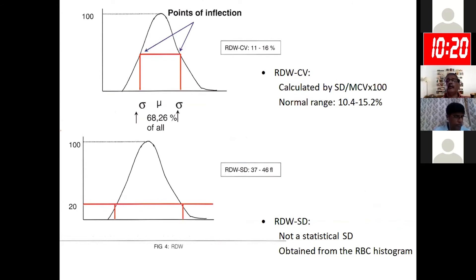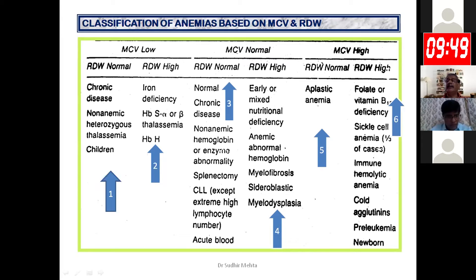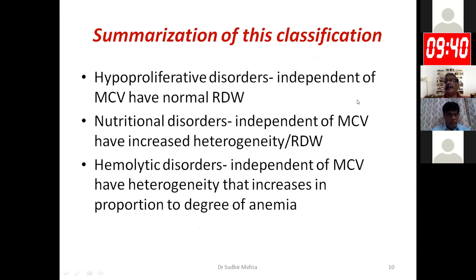We commonly classify anemia by MCV as microcytic, normocytic, or macrocytic, or by etiological classification, but both are not optimal for clinicians. Using MCV (low, normal, or high) combined with RDW (normal or high), we get six groups of anemias. To summarize: hyperproliferative disorders have normal RDW independent of MCV; nutritional disorders have increased RDW; and hemolytic disorders have heterogeneity that increases in proportion to the severity of anemia.